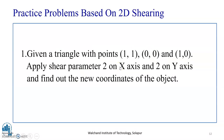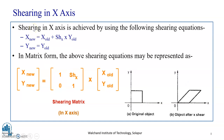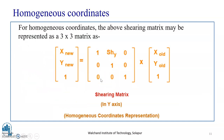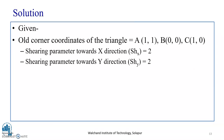Now that you have understood the concept of shearing and its representation in matrix form, we will solve a practice problem based on 2D shearing. Given a triangle with points A(1,1), B(0,0), C(1,0), apply shear parameter 2 on the x axis and 2 on the y axis and find the new coordinates of the object. We are given a triangle with 3 points and we have to apply the shear parameter of 2 units along both axes. Let's solve this using a stepwise approach.